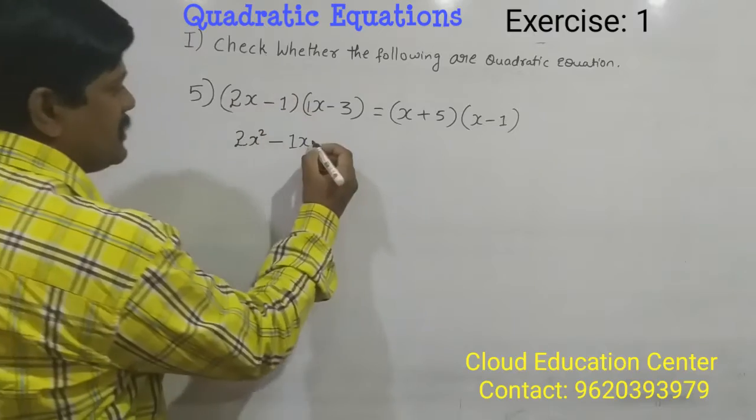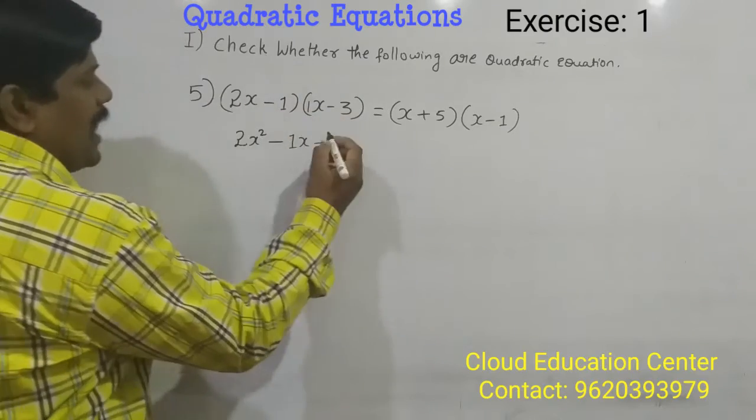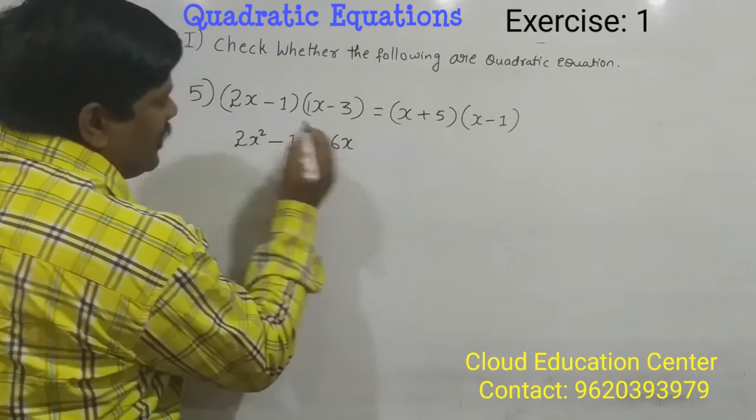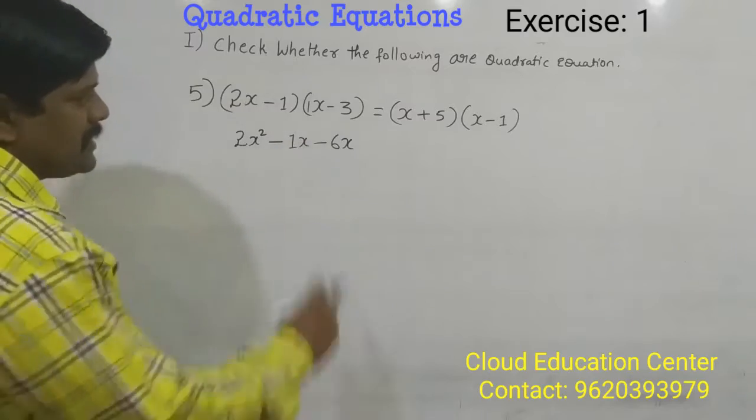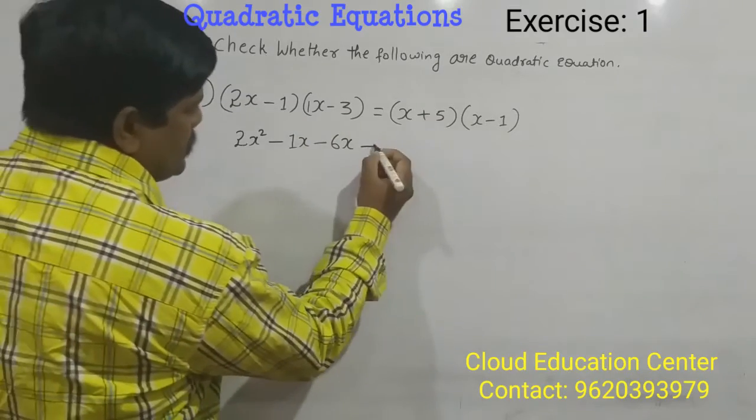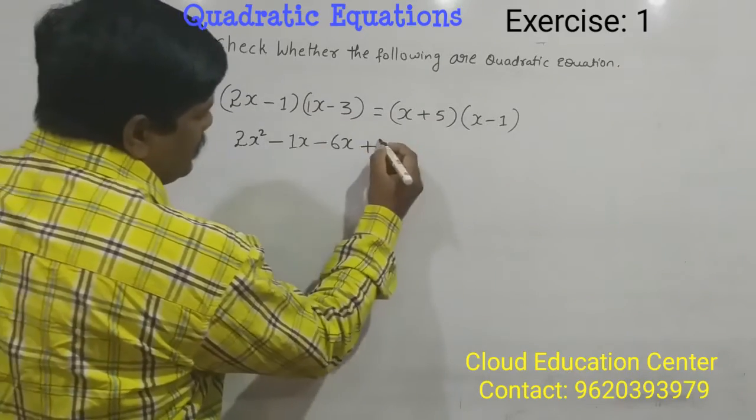Minus into plus is minus, 3 times 2 is 6, and here take x as it is minus 6x. Minus into minus is plus, 3 times 1 is 3.